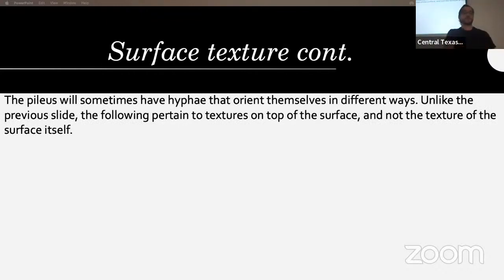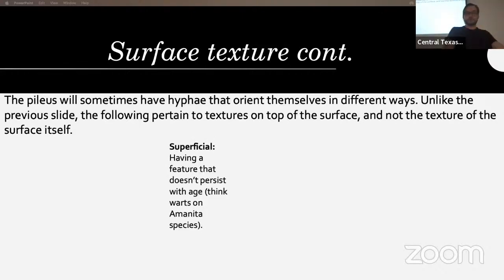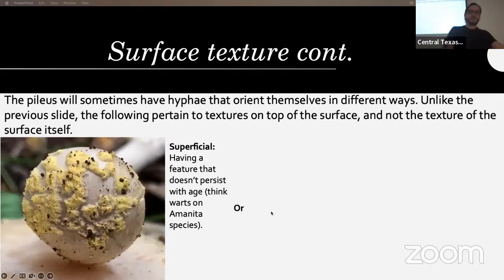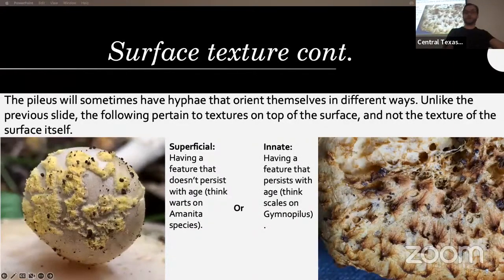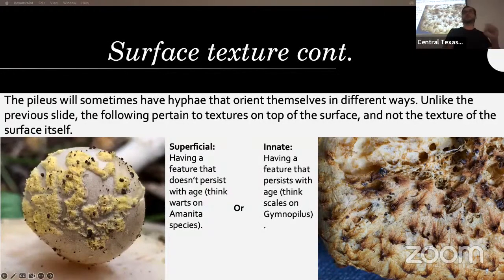The cap will sometimes have hyphae orienting themselves in different ways — unlike the previous slide, this pertains to textures on top of the surface, not the texture of the surface itself. They can have superficial features — having something that doesn't persist with age, like warts on an Amanita — or innate features that persist with age, like the scales on this Gymnopilus junonius full of squamulose features. Innate features like these scales require quite a beating from rain to actually wash them off.